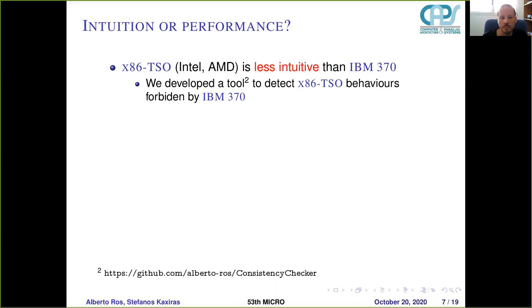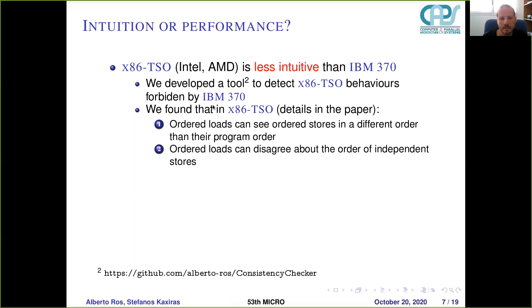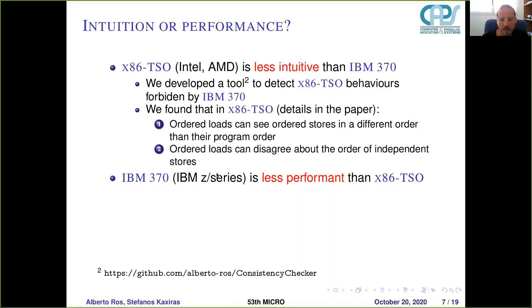Why is x86-TSO less intuitive? We developed a tool to detect x86-TSO behaviors that are forbidden by IBM 370. We found that in x86-TSO, loads can see stores in a different order than they appear in the program — meaning either the load-to-load order is broken or the store order is broken. Also, loads can disagree about the order of independent stores. Two stores written by different threads and two pairs of loads from two threads — the two pairs of loads cannot agree on which store happened first. This makes the atomicity less intuitive.